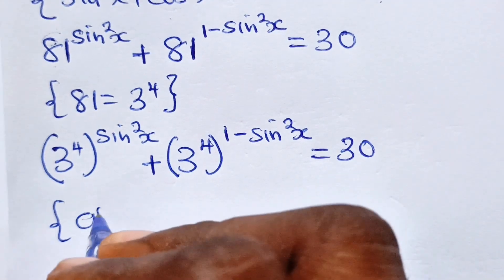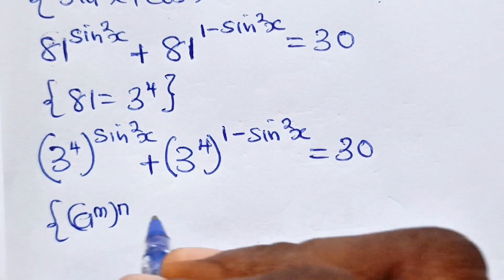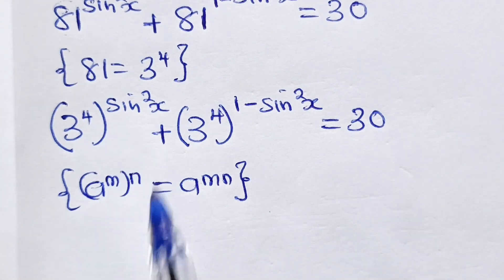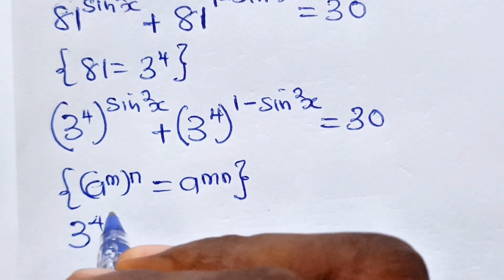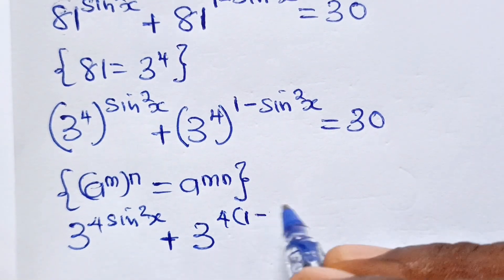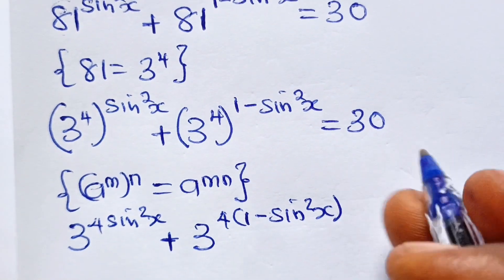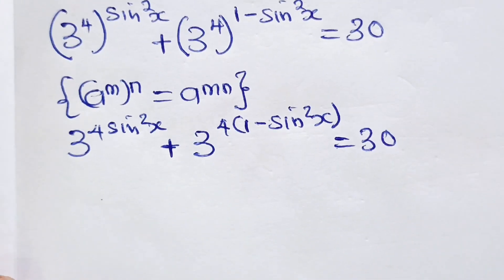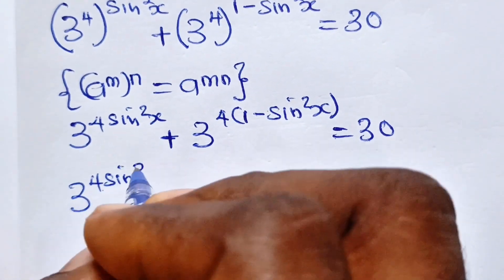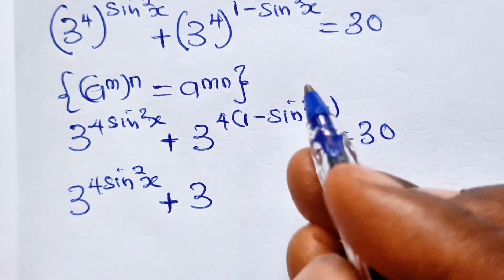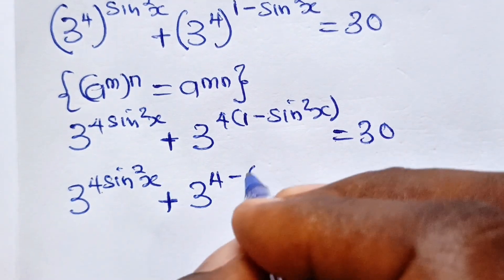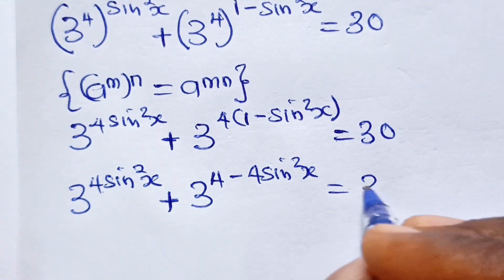Remember that a to the power of m raised to the power of n equals a to the power of m times n. So we can write this as 3 to the power of 4sin²x plus 3 to the power of 4(1 − sin²x), which expands to 3 to the power of 4sin²x plus 3 to the power of (4 − 4sin²x), is equal to 13.